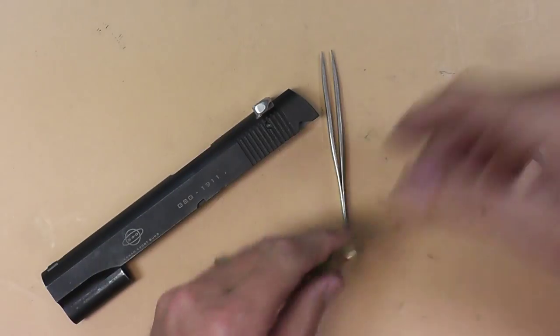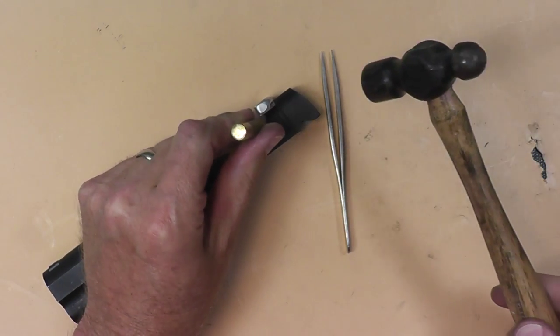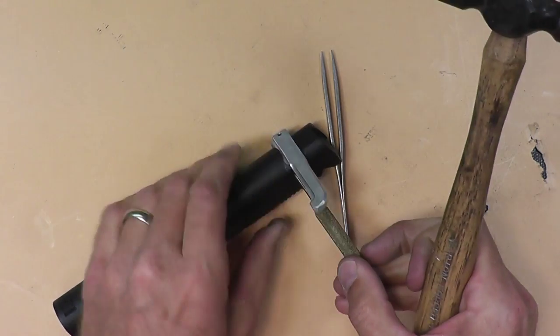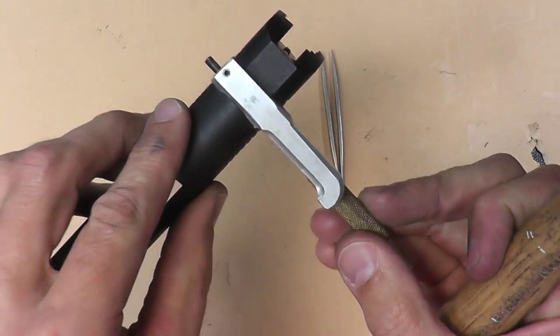So I'm going to hammer from this side. I'm going to use my trusty brass punch. Get yourself some brass punches. I'm going to tip it up a little bit. Give it a few whacks and it should come out pretty easy once you get it started.